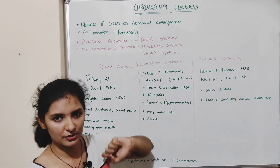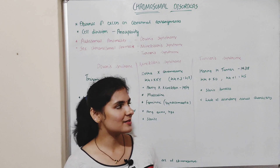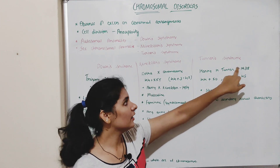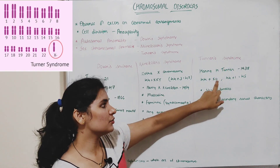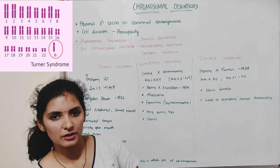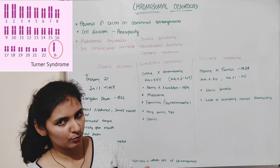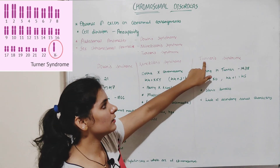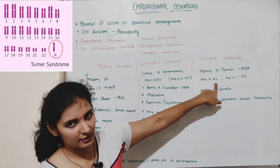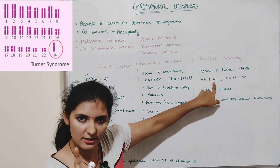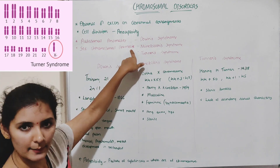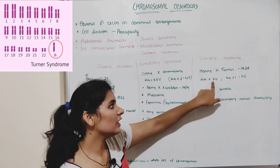Now let me talk about Turner syndrome. Turner syndrome is a genetic disease described for the first time by Henry H. Turner in 1938. It is caused mainly due to the absence of one X chromosome — one X chromosome is missing in this individual. A normal individual has 2 X chromosomes, but the individual with Turner syndrome has only 1 X chromosome.